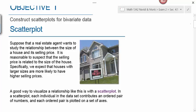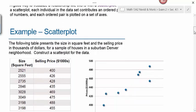Objective 1: Construct scatter plots for bivariate data. Suppose that a real estate agent wants to study the relationship between the size of a house and its selling price. It's reasonable to suspect that the selling price is related to the size. A good way to visualize this relationship is with a scatter plot, where each individual contributes an ordered pair plotted on a set of axes.